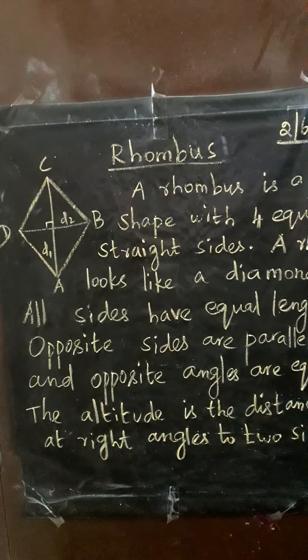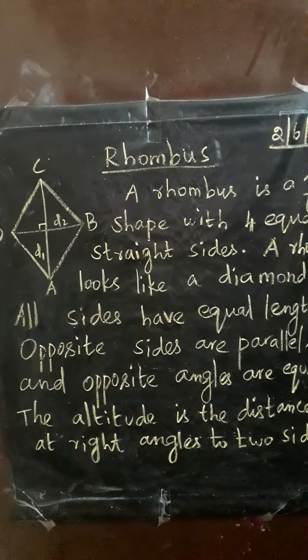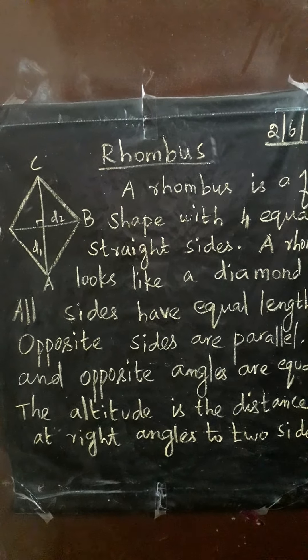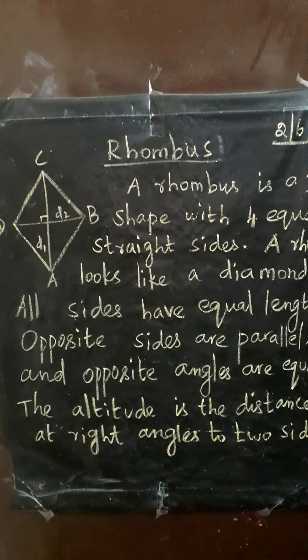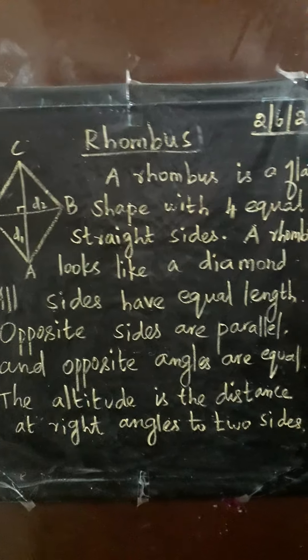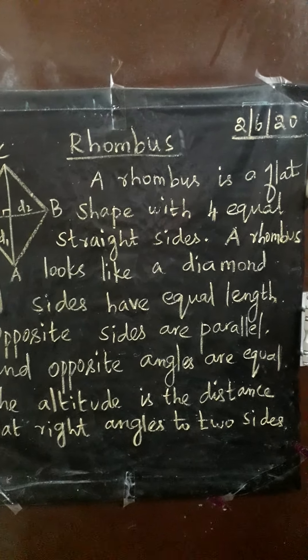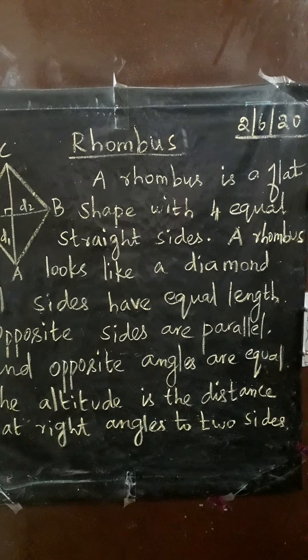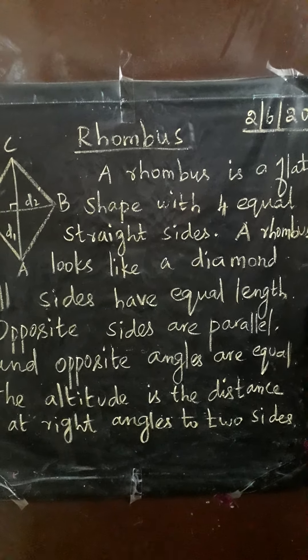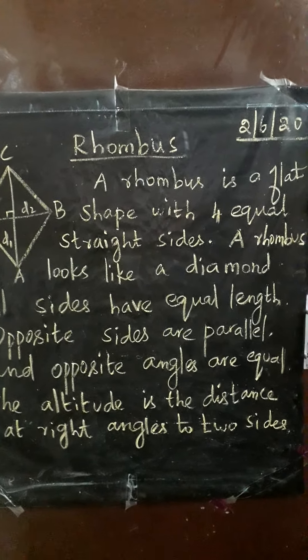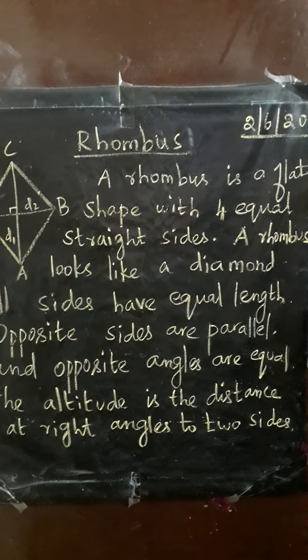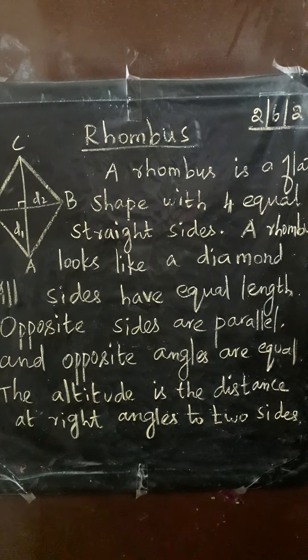Good morning students. Today we are going to learn about rhombus. A rhombus is a flat shape with four equal straight sides. A rhombus looks like a diamond.